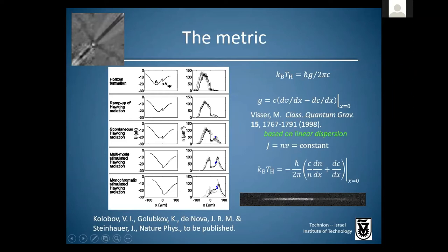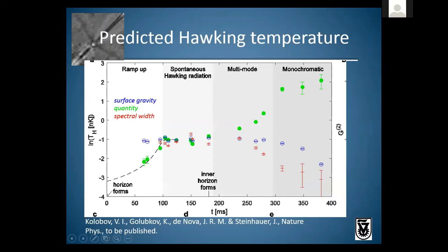To compute the Hawking temperature — or the analog of the surface gravity — we compute the derivatives of the flow velocity and speed of sound right at the sharp horizon. The speed of sound is accessible through the density. We measure images of the density, and to get the flow velocity we assume a constant current, converting the derivative of velocity to a derivative over the density to obtain the equation for the Hawking temperature. We evaluate these derivatives and compute the predicted Hawking temperature — measuring the surface gravity — though we haven't yet seen the radiation.